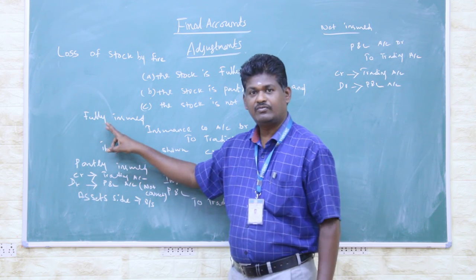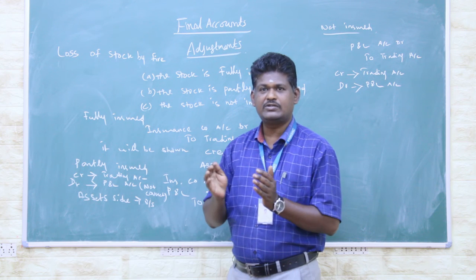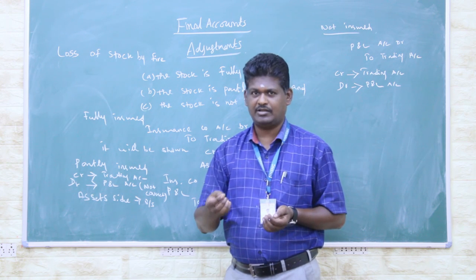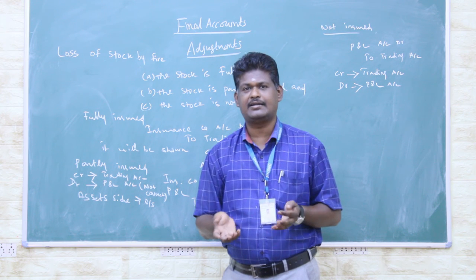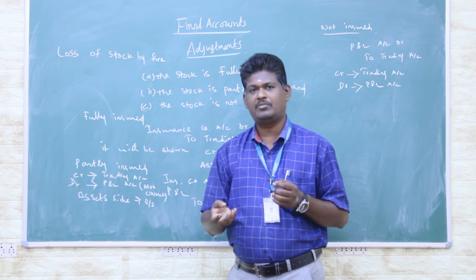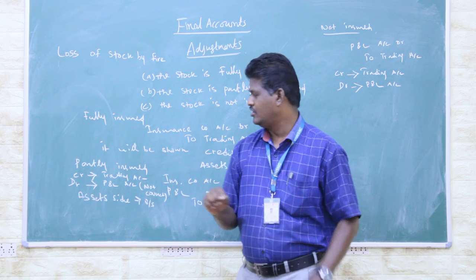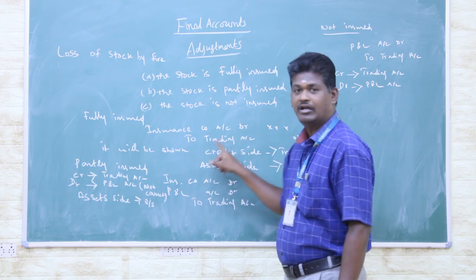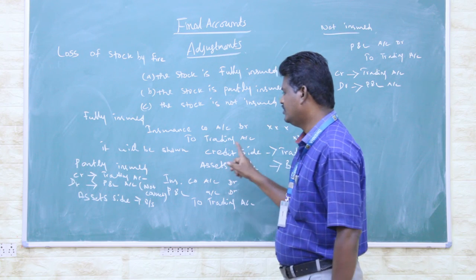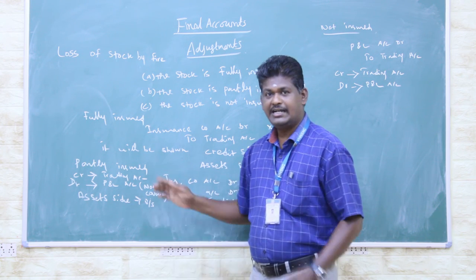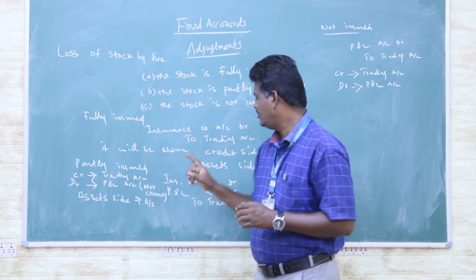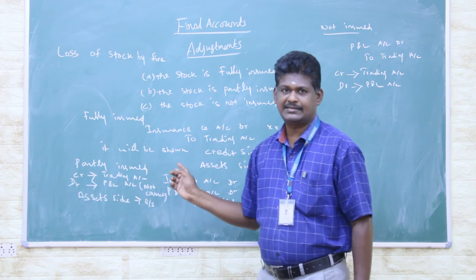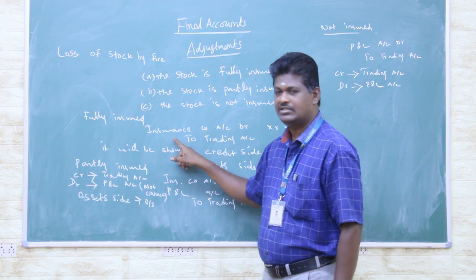First one: fully insured. If the stock is fully insured — for example, 1000 rupees is lost and 1000 rupees is insured — then we debit the insurance company account and credit the trading account. The insurance company amount is shown on the assets side as the balance. This is the first adjustment.